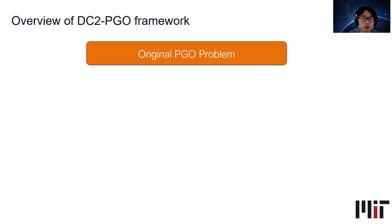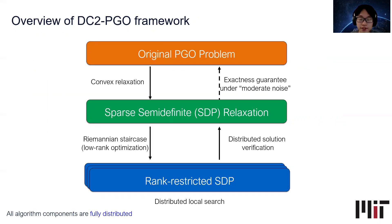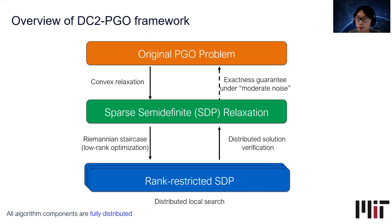Here is an overview of the DC2PGO framework. Starting from the original PGO problem, we first apply convex relaxation to arrive at a sparse semi-definite program. As a major theoretical contribution, we prove this SDP relaxation is exact under moderate noise. However, in practice these SDPs can be very large scale and computationally challenging to solve directly. We therefore propose a technique based on the distributed Riemannian staircase, which applies distributed low-rank optimization to solve a hierarchy of rank-restricted SDPs. We use a distributed local search method to recover local solutions of these rank-restricted SDPs, and a distributed solution verification module to verify that the local solution actually corresponds to the global solution of the SDP relaxation.